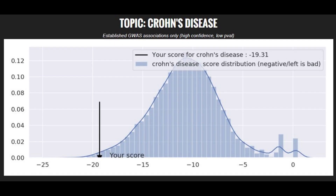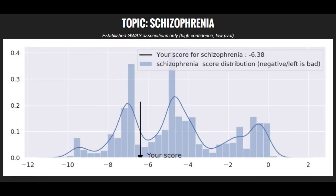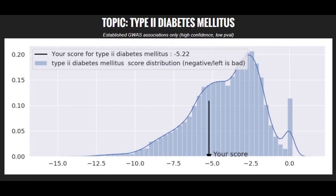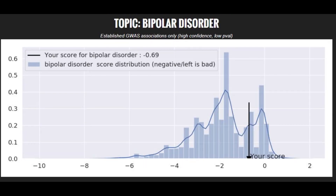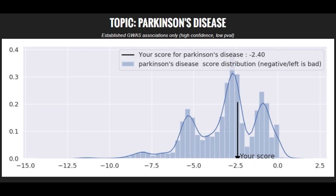When it comes to polygenic illnesses and traits, he had a very high — probably top 1% — score for Crohn's disease, a pretty high score for schizophrenia, an above average but not particularly high score for type 2 diabetes, a below average risk for bipolar disorder, and an average risk for Parkinson's disease.